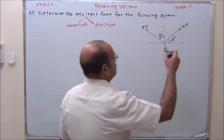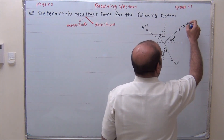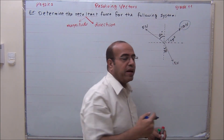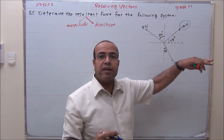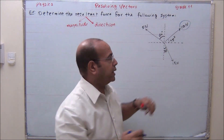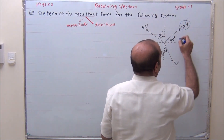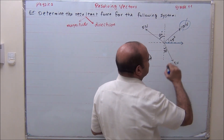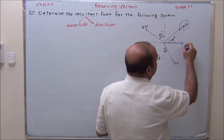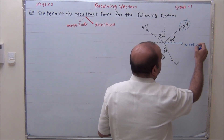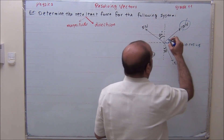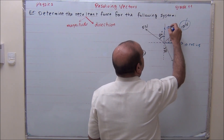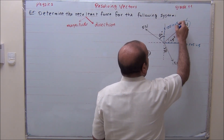We resolve this 10 Newton force. The side near to the angle is cosine. So we resolve this 10 Newton into two components: 10 cosine 45 in one direction, and 10 sine 45 in the other direction.